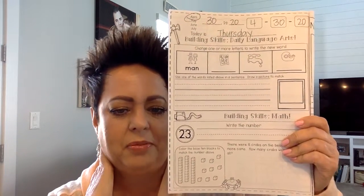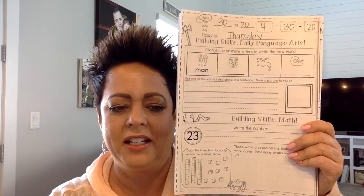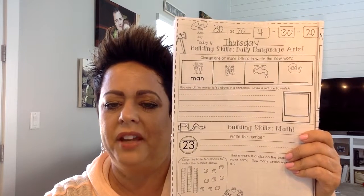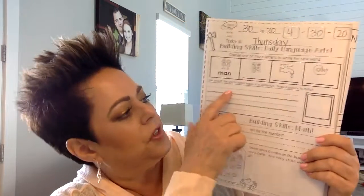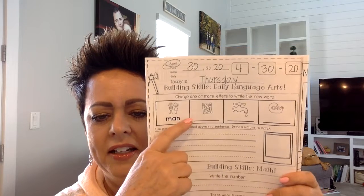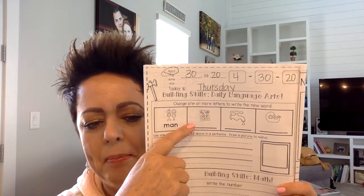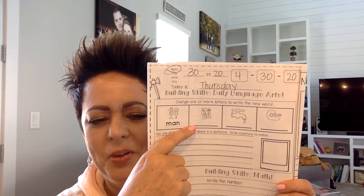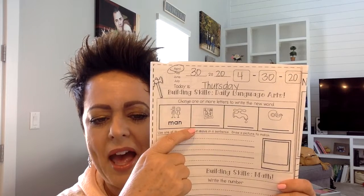So if you need to stop the video, you can. The next thing we're going to do — it says change one or more letters to make the new word. So the first one right here says man. M-A-N. This is a picture of a map. So if we were going to change man to map, what would we do? M-A-P. Go ahead and write it. See if you wrote the same letters as I did. Map.